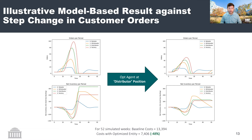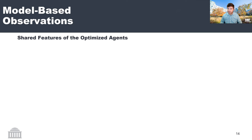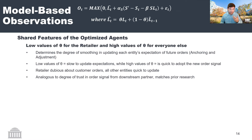Across all these different optimizations, certain commonalities emerge. Specifically, theta is very low for the retailer facing the customer order, but very high for all other members of the supply chain. In my mind, theta is directly analogous to trust. Theta is the parameter by which a player takes in an order signal and then updates their future expectation for what future orders will be. So the retailer is actually very slow to take the customer's current order as indicative of future orders, but every other entity within the supply chain very quickly updates their future expectations based upon the signal they're receiving.